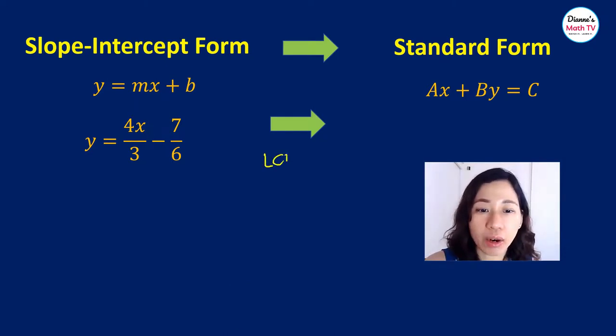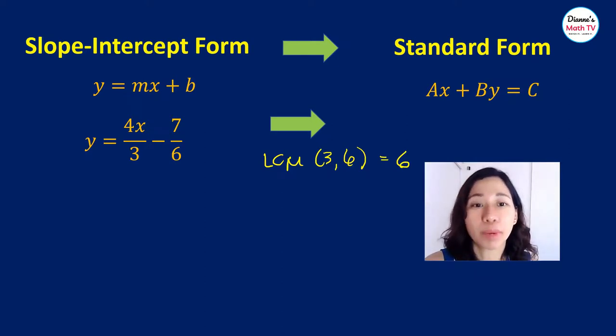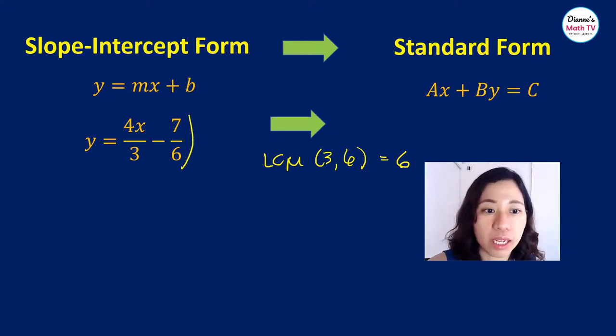What is the LCD? I mean, I should just say LCM. What is the LCM of 3 and 6? That is equal to 6. What is the meaning of LCM again? The smallest number that can be divided both by 3 and 6. So let us multiply both sides by 6.